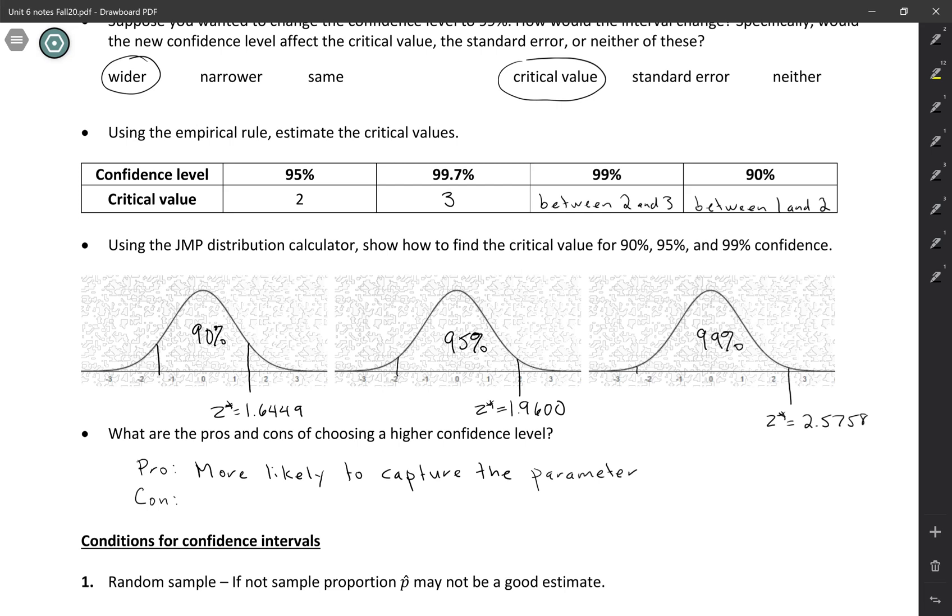And if we want to think about an extreme example, it's easy to see the cons. So if we wanted to be a hundred percent confident, we could just do an interval all the way from zero to one, right? We'd be a hundred percent confident that the true parameter was in there, but that's not useful at all. All proportions are between zero and one.